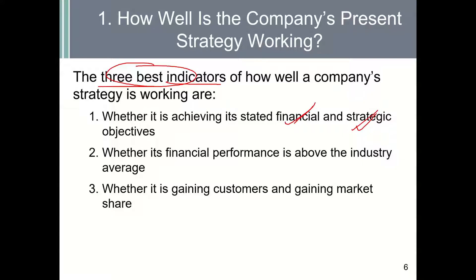Recall that the definition of a strategy is to outperform a firm's rivals. Therefore, these objectives should be compared with a company's competitors. This leads to the second indicator, which is to compare a company's financial performance with the industry's average. By doing so, we would be able to know if a company is performing better than an average competitor. The third indicator is to determine whether there has been a growth in the company's market share, which tells us if the company is doing better than its competitors.